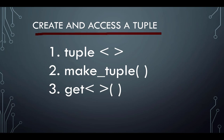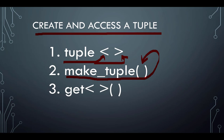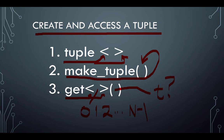First, let's create an accessor tuple. The keyword is 'tuple', followed by angle brackets. When you make a tuple, you use parentheses to fill it with data. To get a piece of data, you use angle brackets filled with the index number — zero, one, two, and so on up to n minus one — followed by the name of the tuple you want to access.